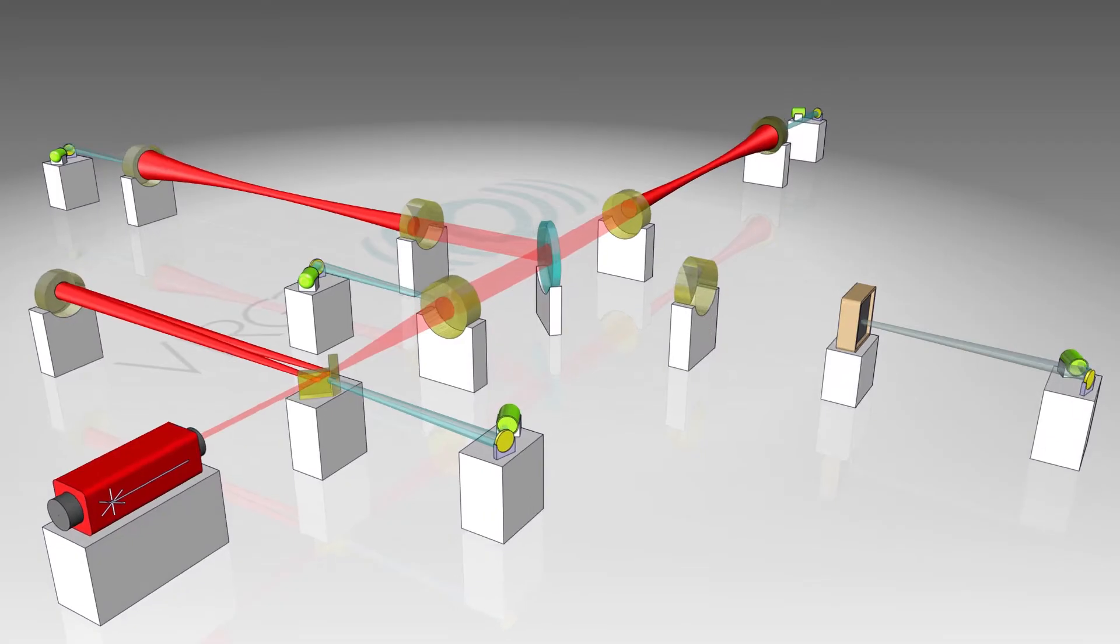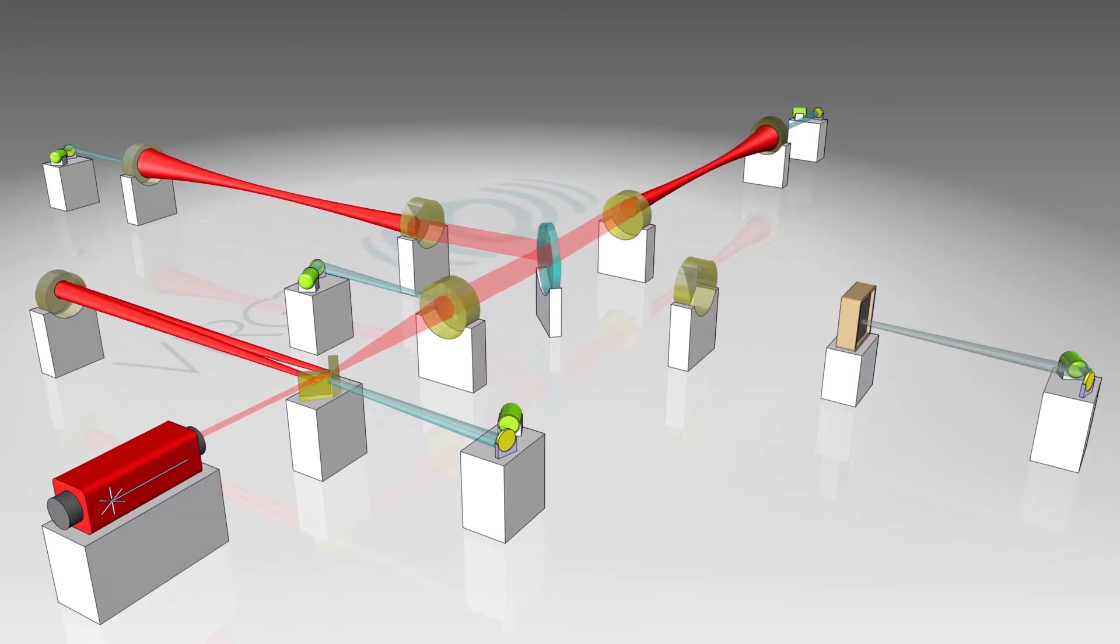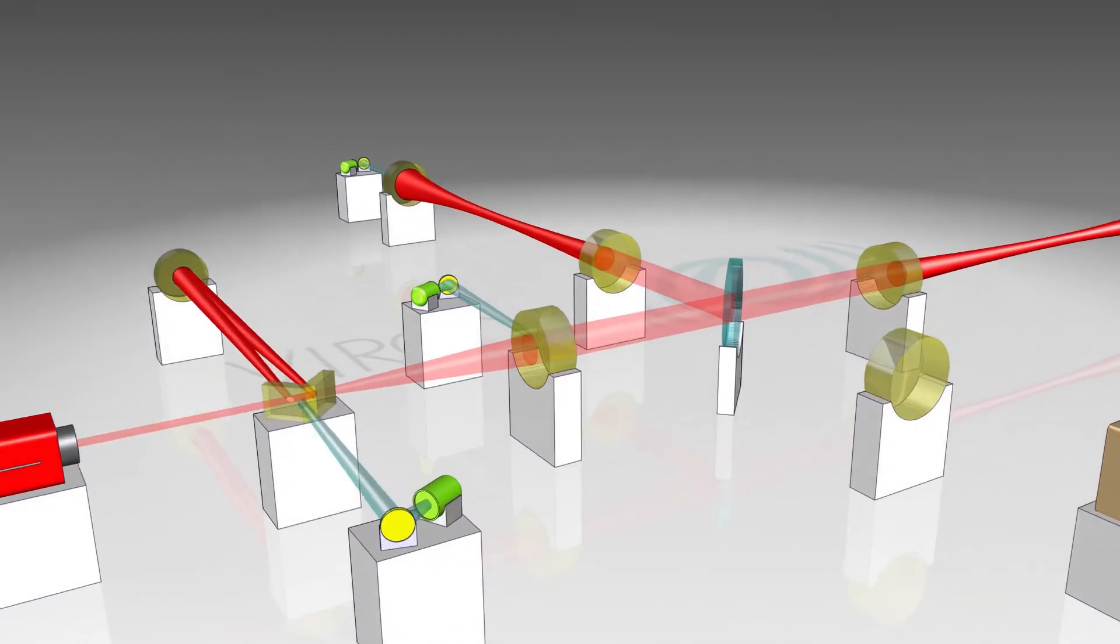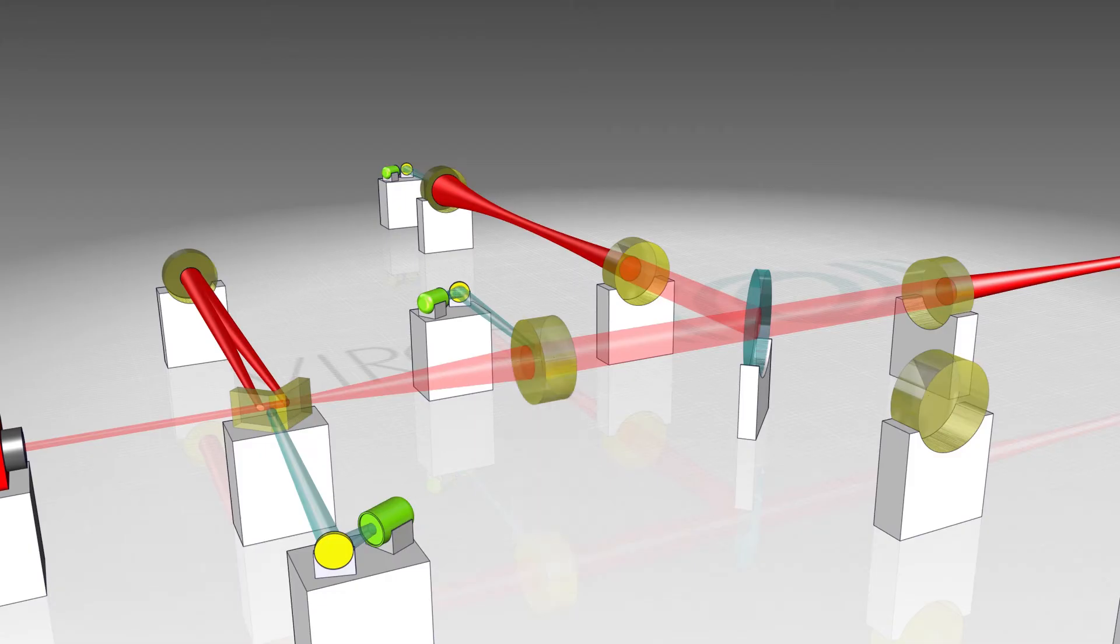Ground vibrations, at most about 100 nanometers, are nevertheless millions of times greater than the vibration caused by a gravitational wave.